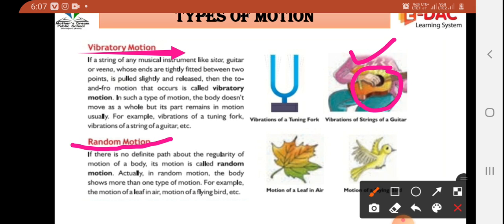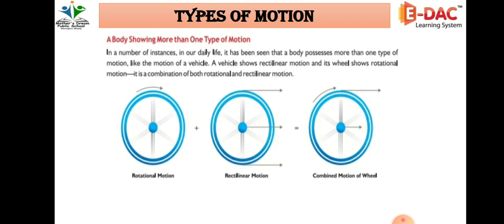Second example: flying birds. When a bird flies, it may move in one direction, then go down — there is no fixed path defined. That is random motion. Next, let's do a quick recap.